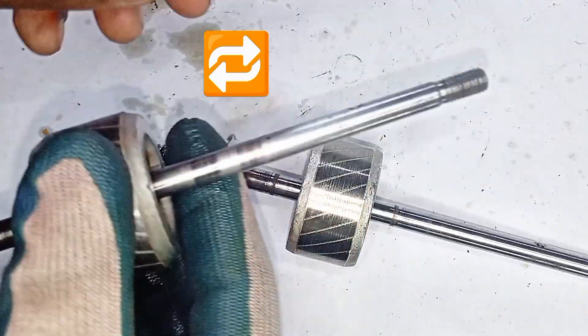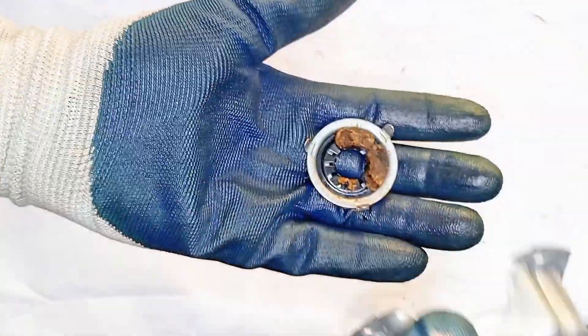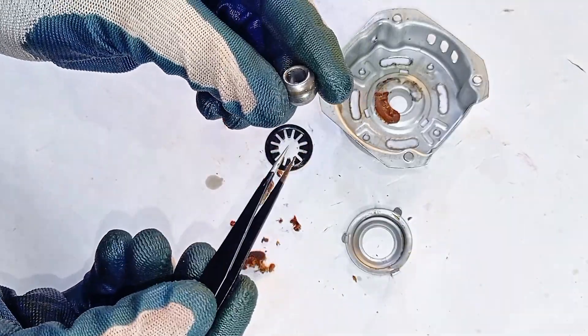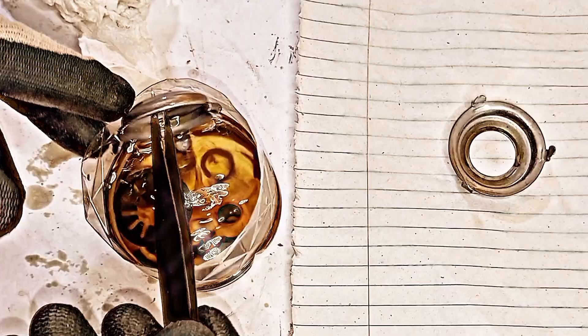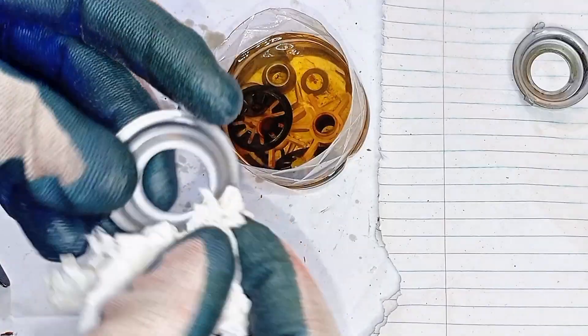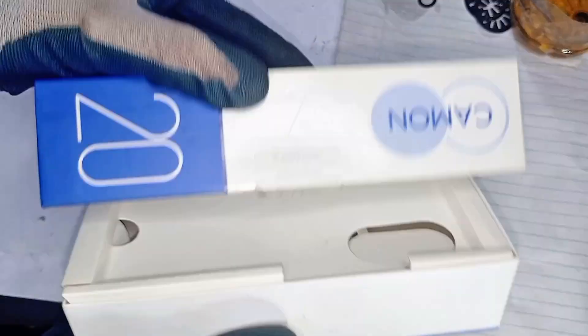Behind these covers lies the real mess: bush bearings wrapped in old, crumbling foam. It's time to retire this grime and give every part a fresh start in a petrol bath. The grime's loosened—now it's time to wipe off every trace, because reassembly needs clean precision. Now remember that mystery box? Let's see what's inside.